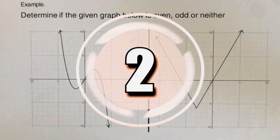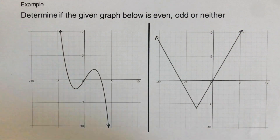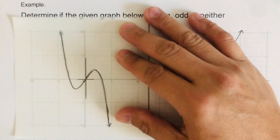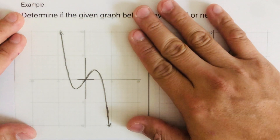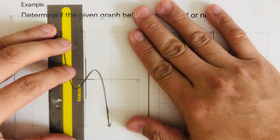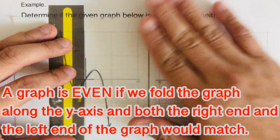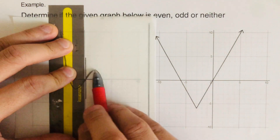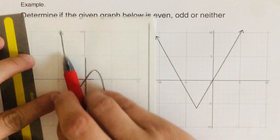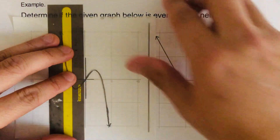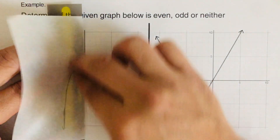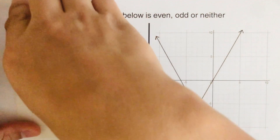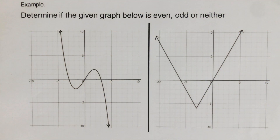Let's go over the next problem. We'll determine if this graph is odd, even, or neither. I've drawn it on the patty paper. Our first test is to fold it along the y-axis to test for symmetry — to see if the right side matches up with the left side. Once we fold it, the left side and the right side are not a match, so this graph is not even.